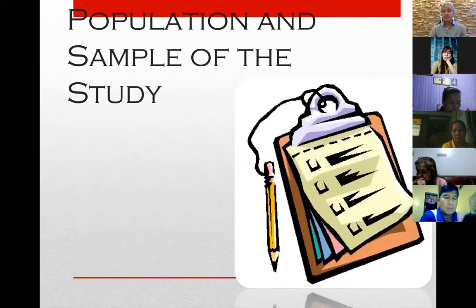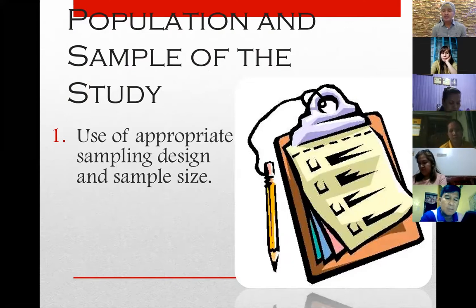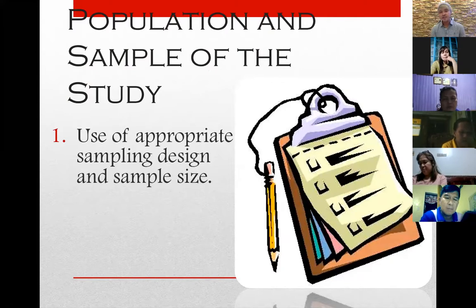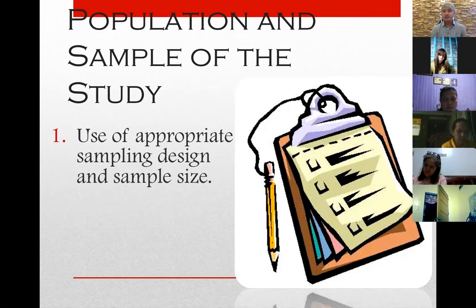The second part of chapter two is population and sample. Population refers to the entire possible number of respondents, represented by capital letter N. Sample is the subset of the population, represented by small letter n. There should be the use of an appropriate sampling design and sample size. When you say design, are you going to use probability or non-probability sampling? For sample size, the most common method used to compute it is Slovin's formula.